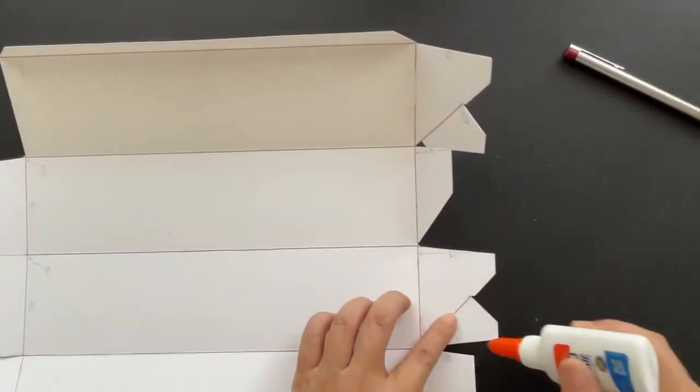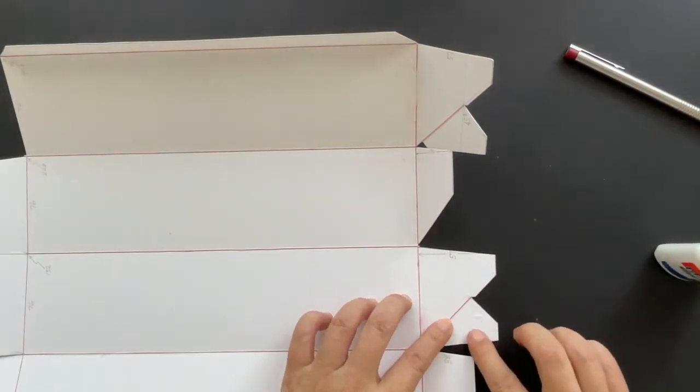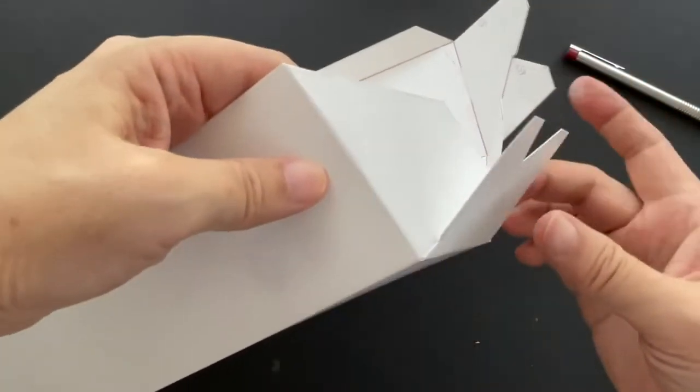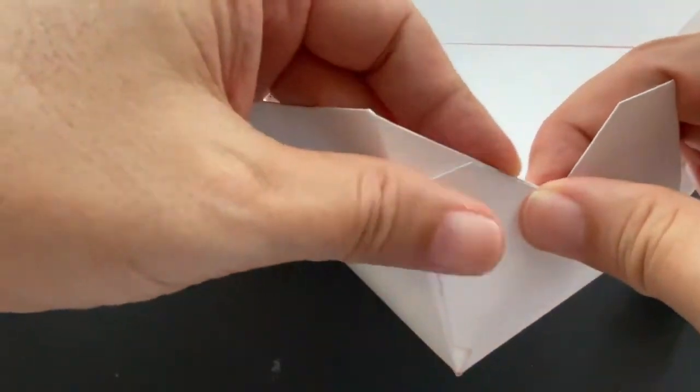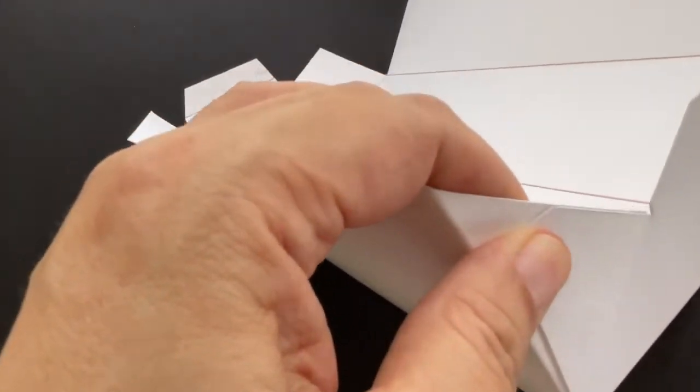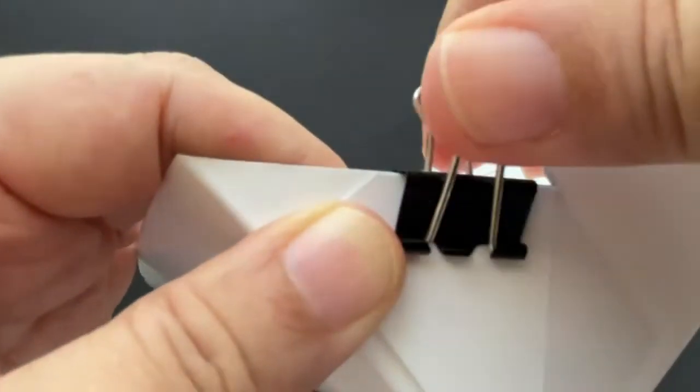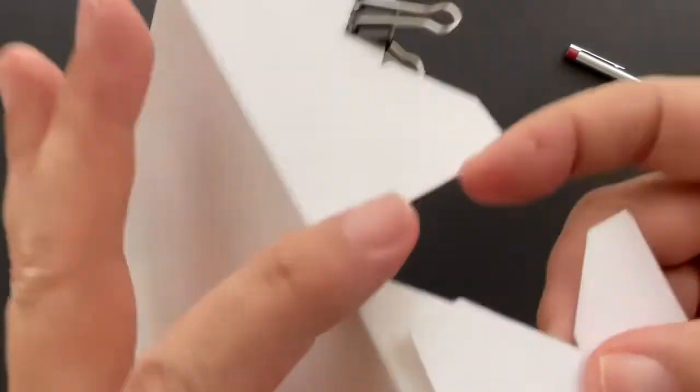Let's put a small dab of glue on the smaller flap. Spread it evenly. And glue it on top of the larger flap, taking care that the edges are aligned. Hold it for a few seconds. Then maybe get a paper clip to hold them together. Let's do the other side the same way.